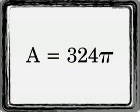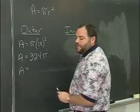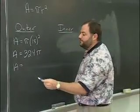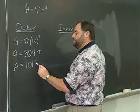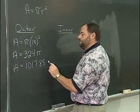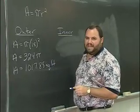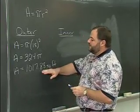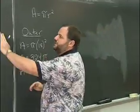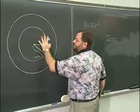18 squared is 324. When I multiply 324 times pi I will get 1017.88 square feet. So that's the area of the outer circle, this entire region right here including the middle.